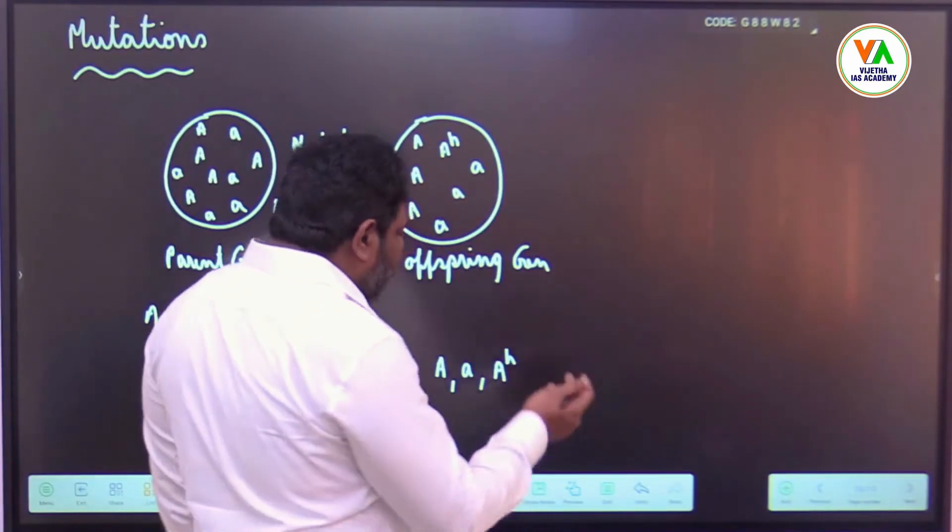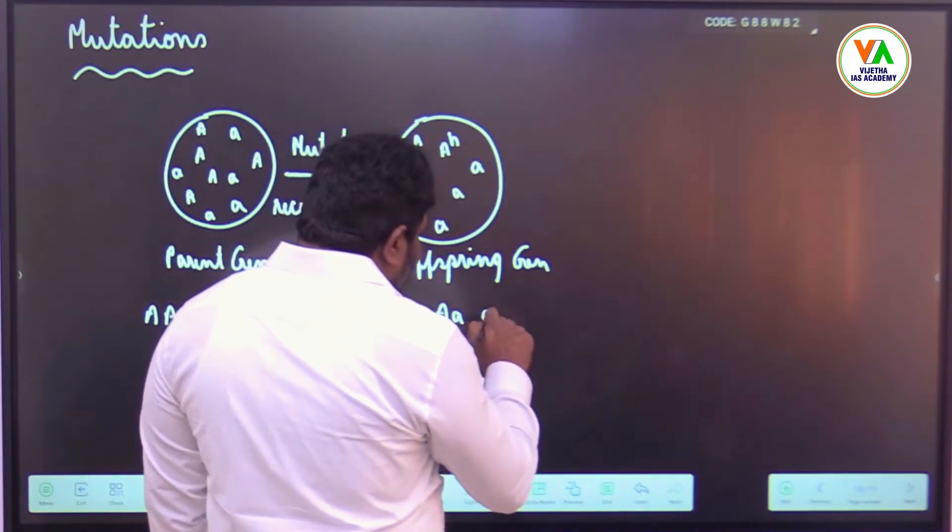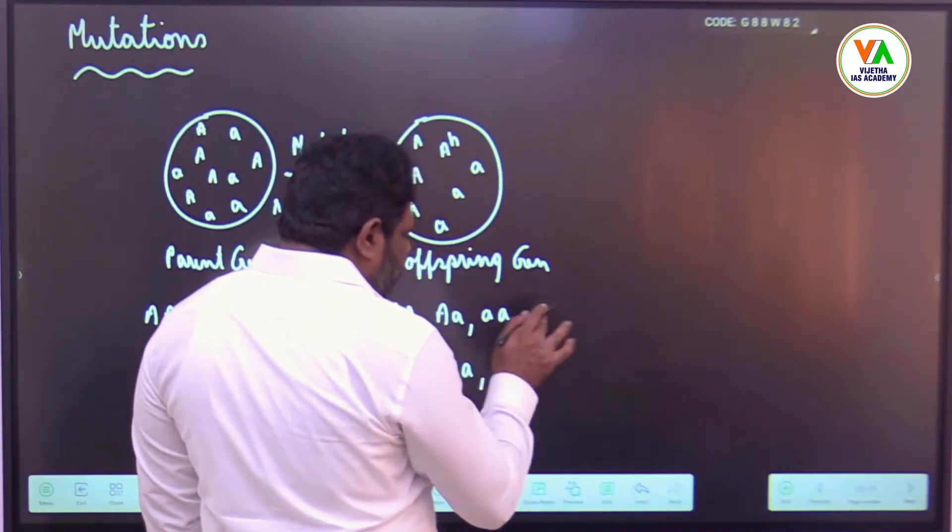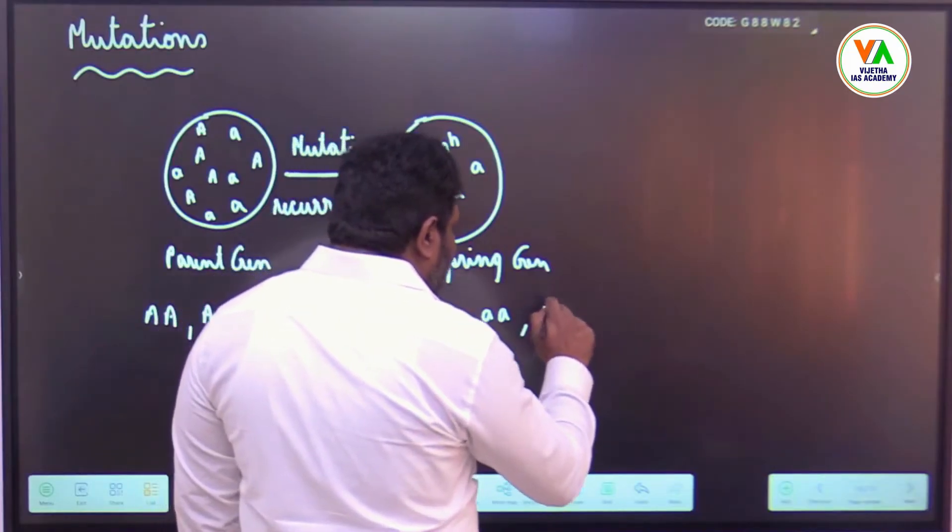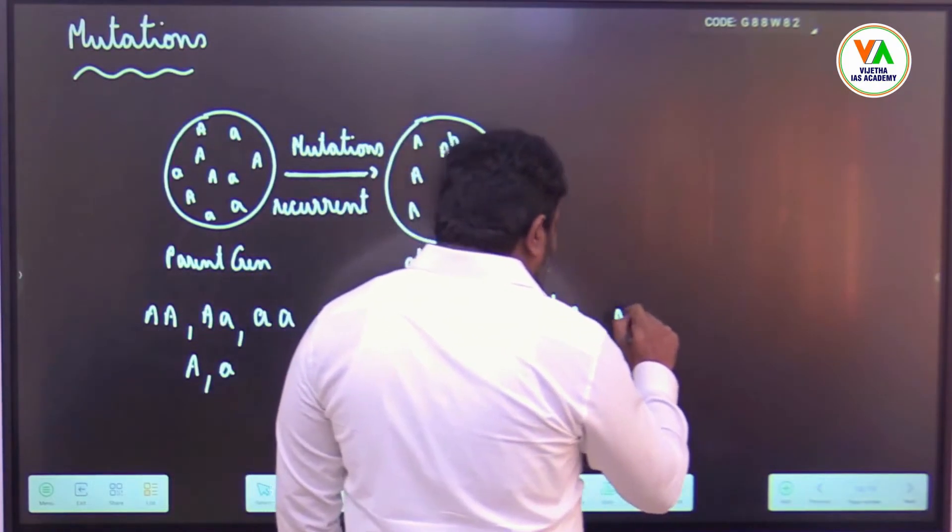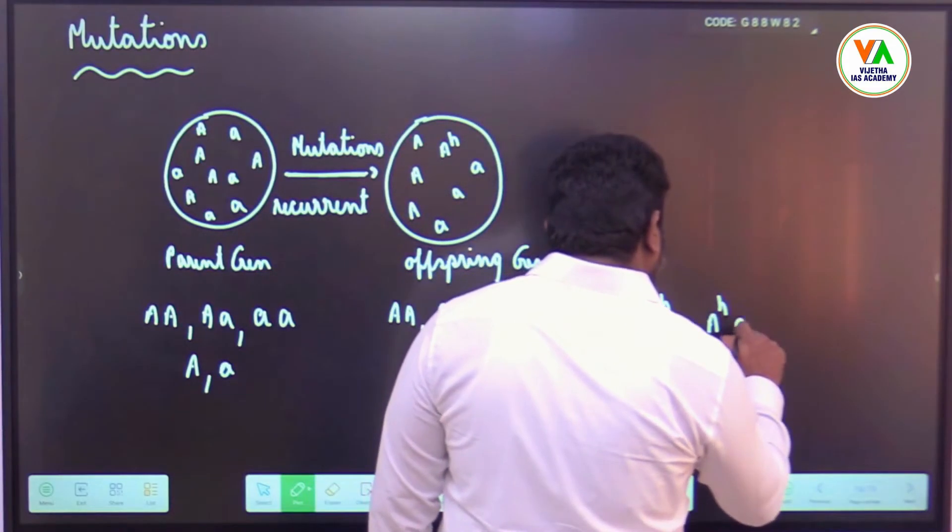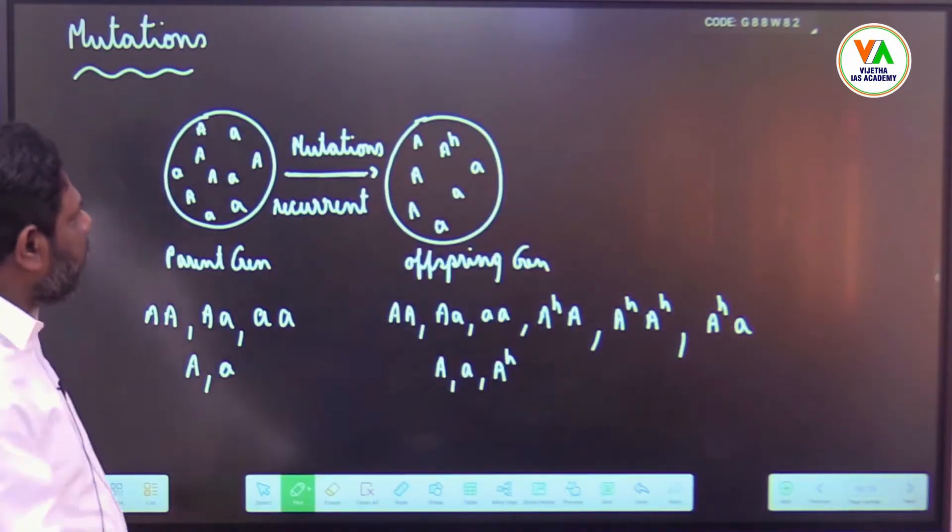Now what could be the genotypes here? Capital A capital A, capital A small a, small a small a, this is over. Now capital A H, then capital A H capital A H, then capital A H small a. This led to...